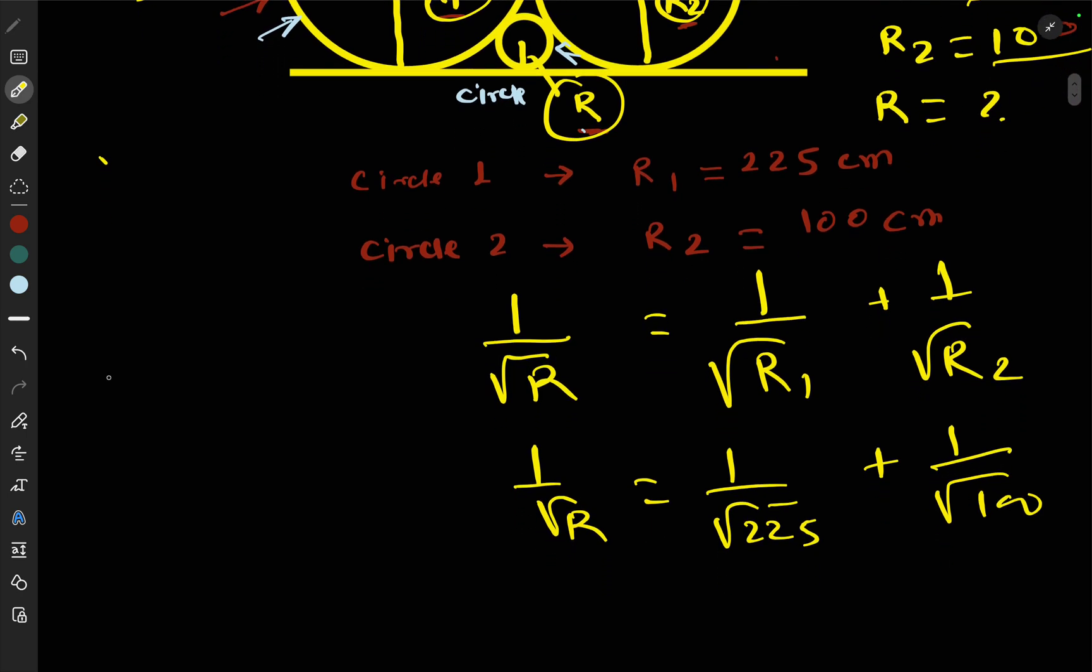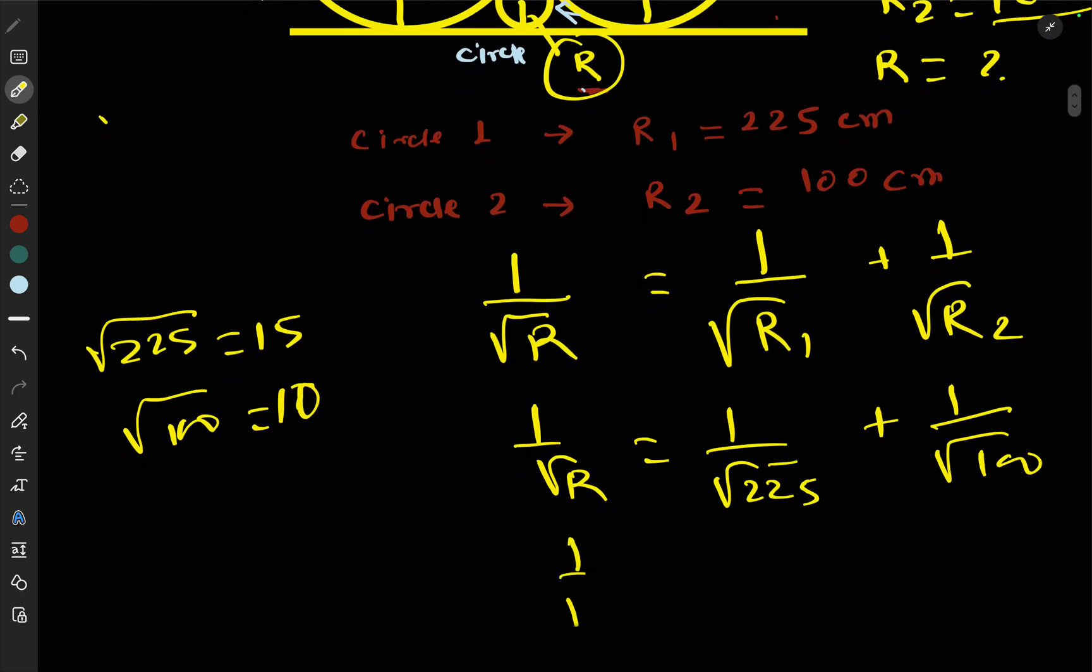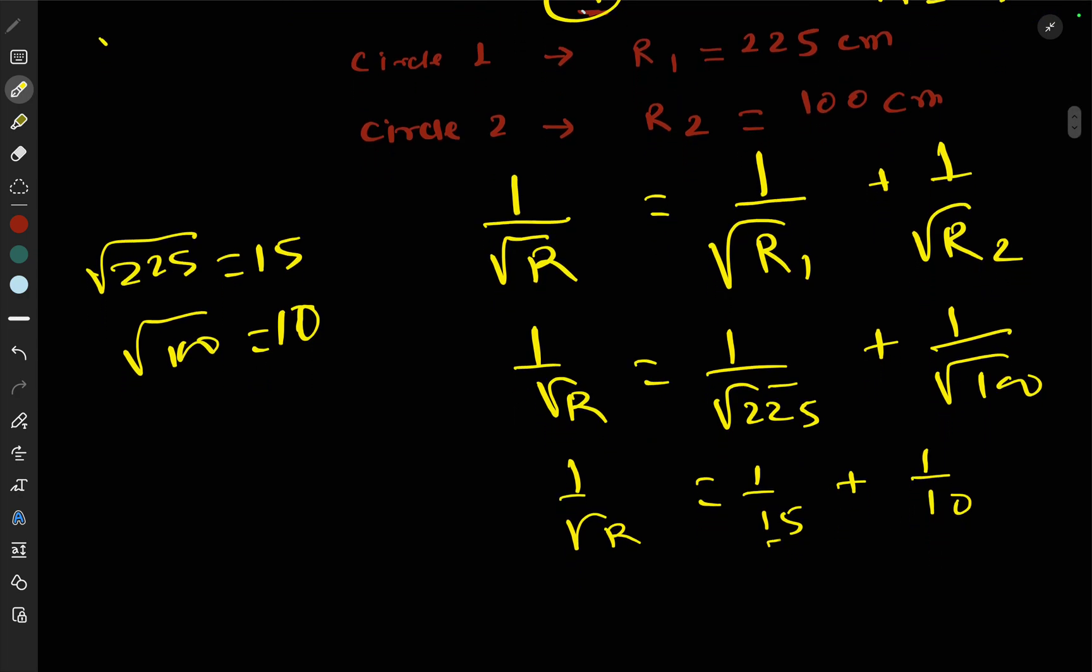√225 = 15 and √100 = 10. So we have 1/15 + 1/10. To solve this fraction, we take the LCM of 15 and 10. Both divide 30, so we'll take 30 as the denominator.